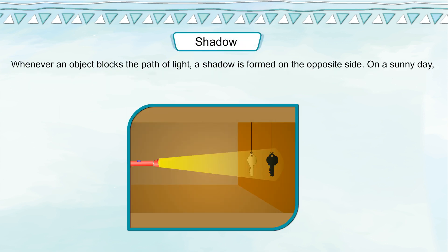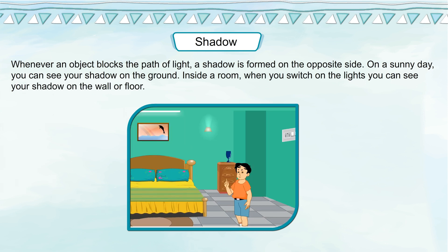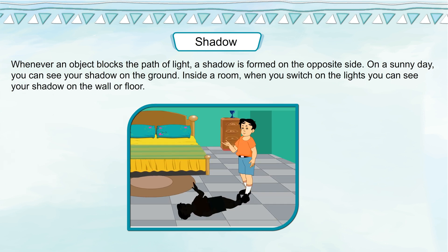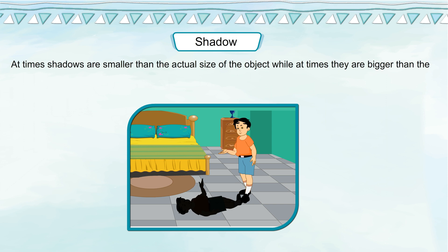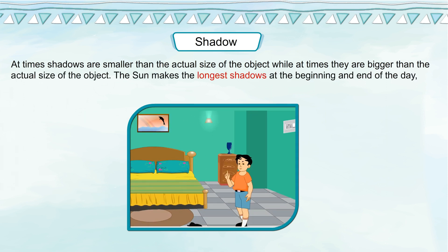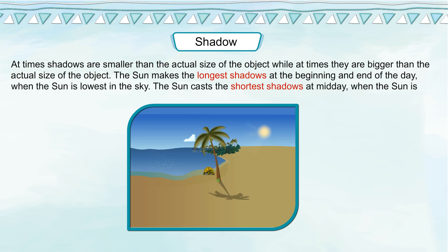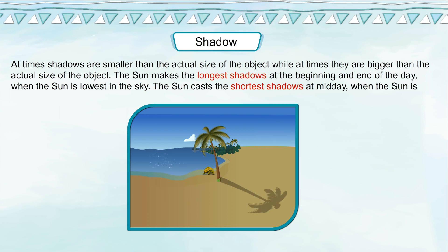Shadow — whenever an object blocks the path of light, a shadow is formed on the opposite side. On a sunny day, you can see your shadow on the ground. Inside a room, when you switch on the lights, you can see your shadow on the wall or floor. At times, shadows are smaller than the actual size of the object, while at times they are bigger. The sun makes the longest shadows at the beginning and end of the day, when the sun is lowest in the sky. The sun casts the shortest shadows at midday, when the sun is highest in the sky.